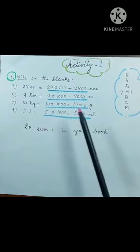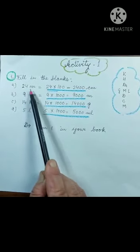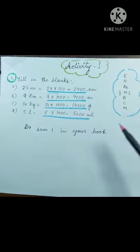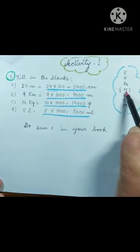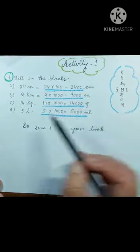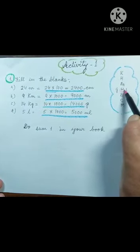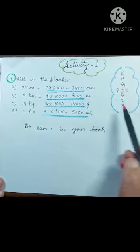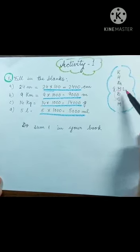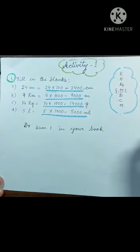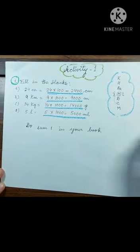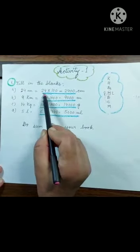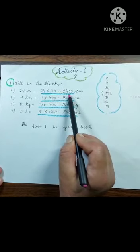Let's try sums of activity one. First problem: 24 meters — convert to centimeters. Write the poem: King Harry Died, Mother Did Not Cry Much. Meter is given, so we go to centimeter — bigger to smaller, multiply. Two steps down means multiply by one hundred. So 24 multiplied by 100 equals 2400 centimeters.